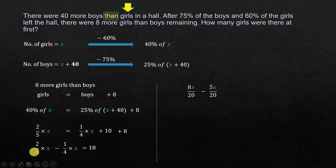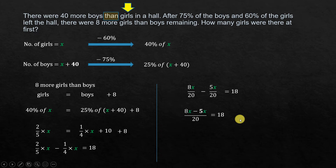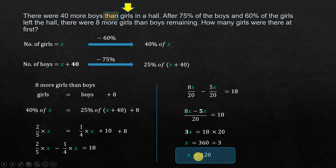Finding the LCM of 5 and 4, which is 20: 2/5 x becomes 8x over 20, and 1/4 x becomes 5x over 20. So 8x over 20 minus 5x over 20 equals 18, giving 3x over 20 equals 18. Therefore 3x equals 18 times 20, which is 360, and x equals 360 divided by 3, which is 120. The number of girls is x, so there were 120 girls at first.